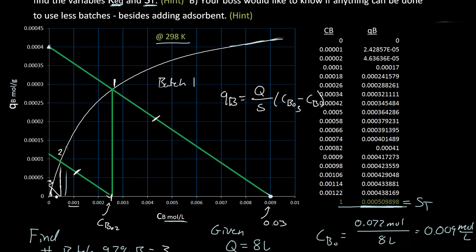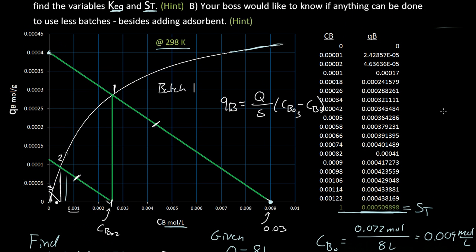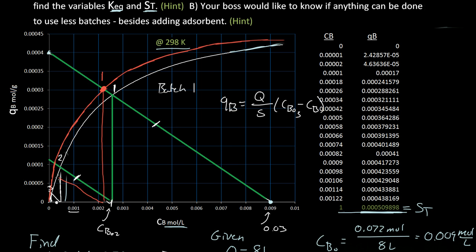The last question asks whether anything can be done to use fewer batches besides adding adsorbent. Remember, this is only at 298 Kelvin. If we lower the temperature, the equilibrium curve shifts — more B will remain on the solid because there is less energy for it to desorb. With a higher equilibrium curve, our graphical construction shows we would only need 2 batches. So lowering the temperature of the system is a viable strategy.